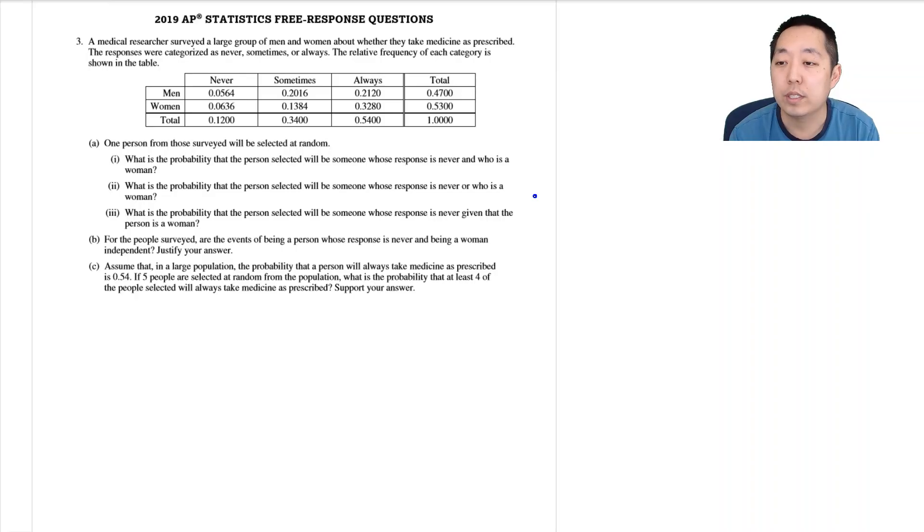A medical researcher surveyed a large group of men and women about whether they take medicine as prescribed. The response variables were categorized as never, sometimes, or always. The relative frequency of each category is shown in the table. One person from those surveyed will be selected at random. What is the probability that the person selected will be someone whose response is never and who is a woman?